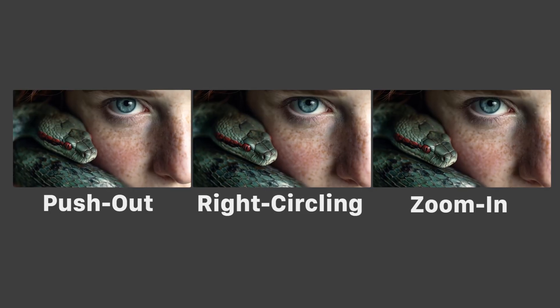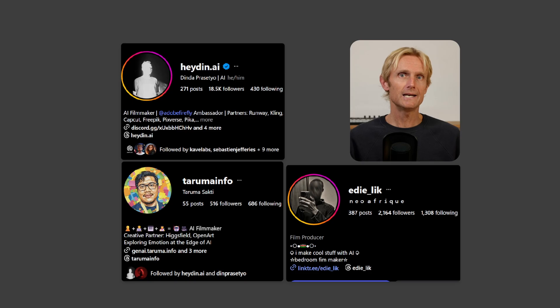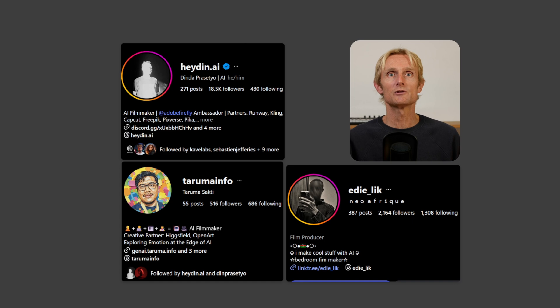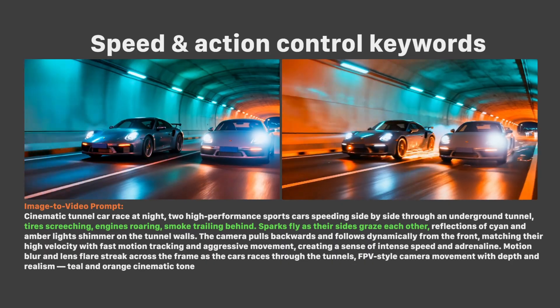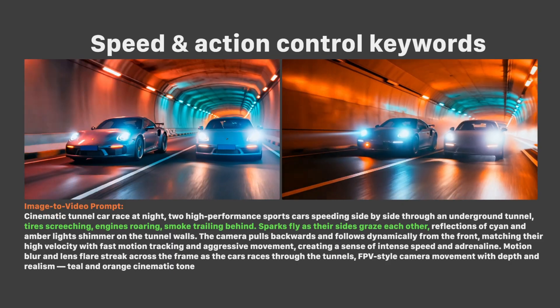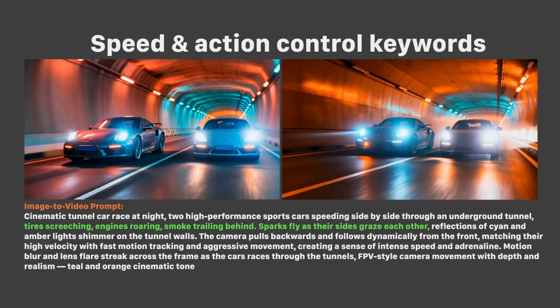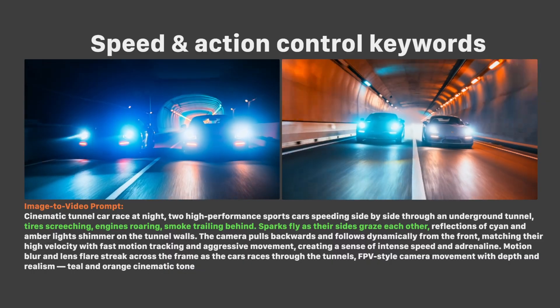Thanks to Hayden AI, Taruma Info, and Eddy Lick for sharing their prompts and insights — highly recommended on Instagram for AI image and video creation tips. Motion can be controlled through description: comparing a base video with one where descriptors like 'tire squeezing, engines roaring, smoke trailing behind, sparks fly as their sides graze each other' were added clearly shows the difference. The left version feels more realistic, while the right gives more dramatic effects — choose based on the desired style.